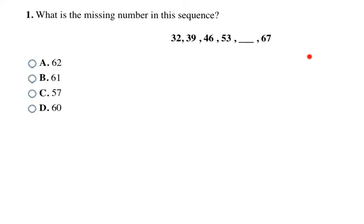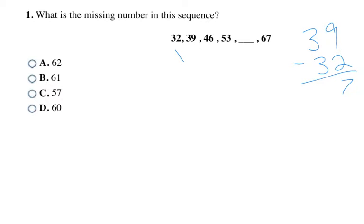Here they give us a sequence — a list of numbers — and we need to find the missing number. I see 32, 39, 46, 53, blank, 67. These numbers are increasing, so I'm going to look for an addition rule. What do I need to add to 32 to get to 39? Counting up gives you 7, or you can subtract: 39 minus 32 equals 7. Either way tells you we're adding 7 each time.